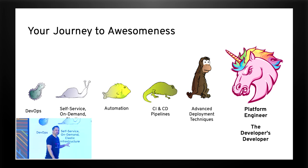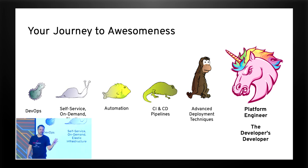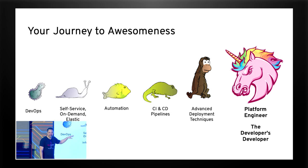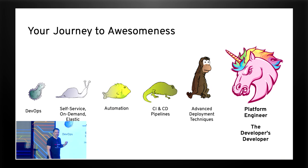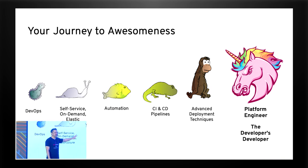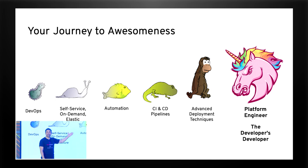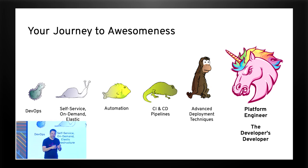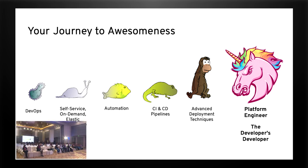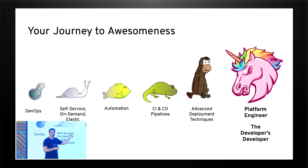This is my evolutionary slide. If you've seen my presentations before, I've been using the same one now for 23 years — I just changed the words underneath the characters. We're all on an evolutionary journey: we have to embrace things like DevOps, self-service on-demand elastic infrastructure, automation, CI/CD pipelines, deployment techniques, and you too can now become a platform engineer. The phrase 'developer's developer' means the developer who develops for developers. The new buzzword for 2022 is platform engineer, and I call that the developer's developer.